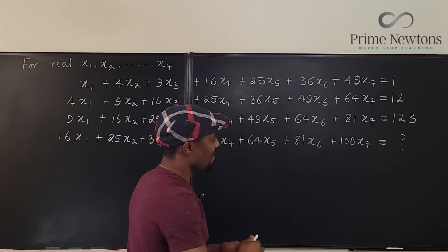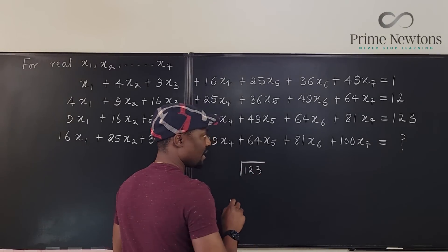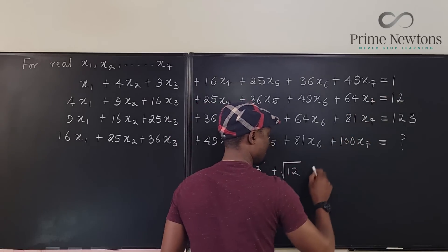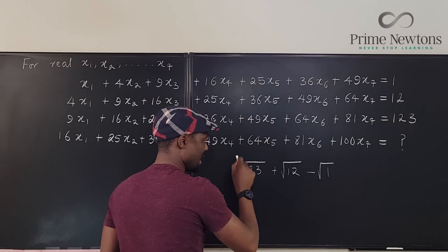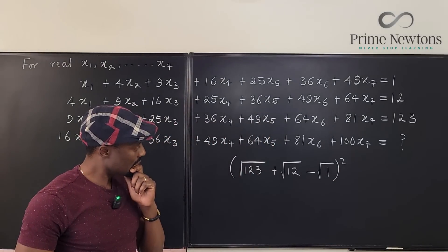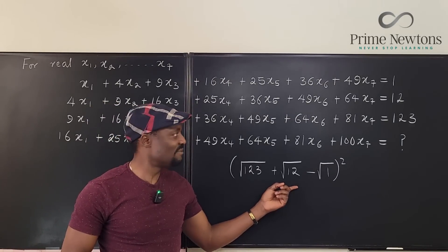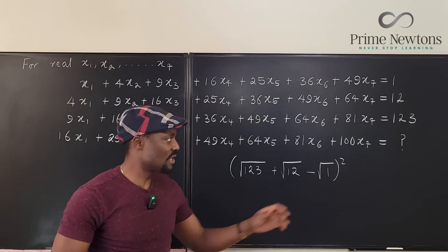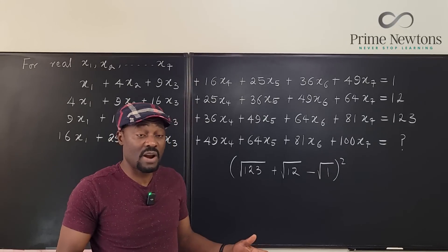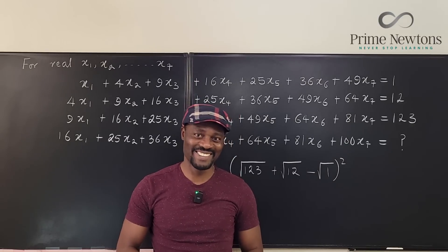So this is what I said: if I take the square root of 123, then take the square root of 12 and add it, then subtract the square root of 1, and then square it — that would be my answer. When I did this, I didn't think it made any sense because it's not a rational number, and I was expecting this to be rational. I'm going to plug this into a calculator and see if it is correct. If not, I'll have to find another way — because there's another way, the right way. Let's get into the video.